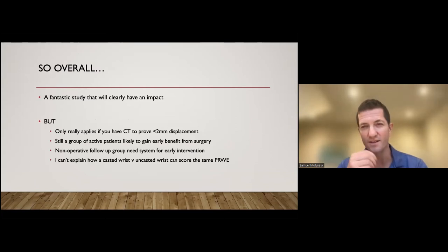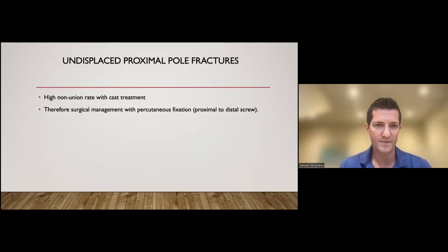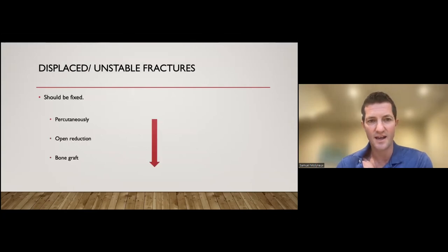They talked about a whole load of complications, but I think the overall complications that needed intervention were much less than that. So I think overall SWIFT trial, you should definitely know about it. It suggested that there's no real difference between percutaneous fixation of undisplaced scaphoids and conservative management, but just be aware of the caveats and the fact that there are patients who will definitely benefit from percutaneous intervention early on. Don't forget that undisplaced proximal pole fractures virtually never unite unless you intervene. So you need intervention with screw fixation from proximal to distal and unstable or displaced fractures need to be fixed as well.